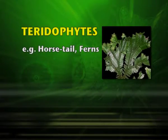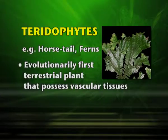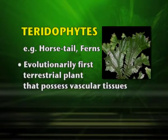Pteridophytes — examples include the horsetail and ferns found in our area. Evolutionarily, they are the first terrestrial plants to possess vascular tissues. Earlier, algae and bryophytes did not have vascular tissue, but pteridophytes are the organisms which have vascular tissues.